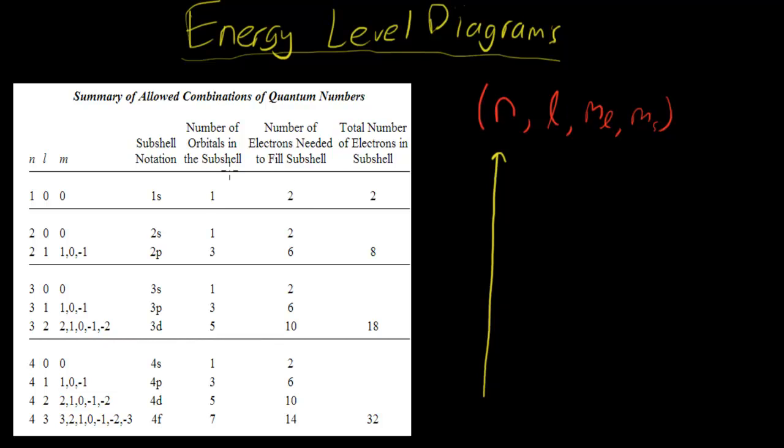Basically it's a diagram that has the orbitals, remember what orbitals are, it's this row right here. This row right here are your orbitals, the number of orbitals in each shell. So the energy level diagram is basically ordering these orbitals in terms of their energy levels. You're basically grouping them up into increasing energy.